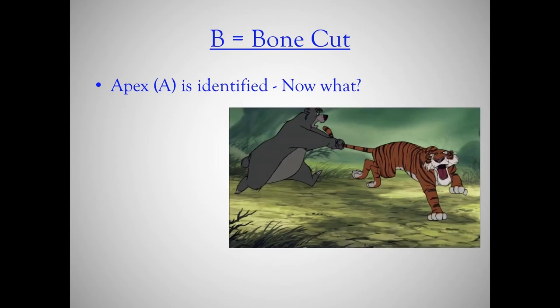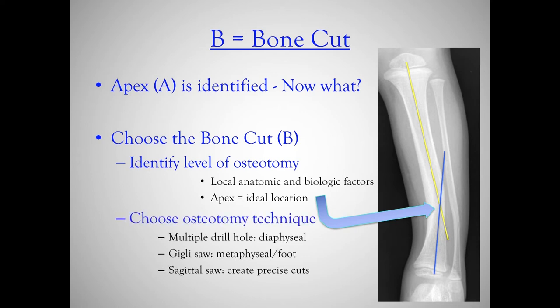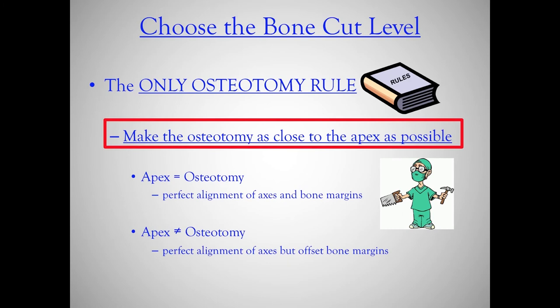Now you find your apex — you know where the deformity is. Now you have to choose your bone cut level. The bone cut level should ideally be at the apex, but local anatomic and biological factors are going to play a part. You want to choose your osteotomy technique: multiple drill holes (very good in diaphysis), Gigli saws in the metaphyseal bones or foot, or precise cuts with a sagittal saw. The only osteotomy rule is: make the osteotomy as close to the apex as possible. You can't control where the apex is or the deformity presented to you, but you can choose your osteotomy level.